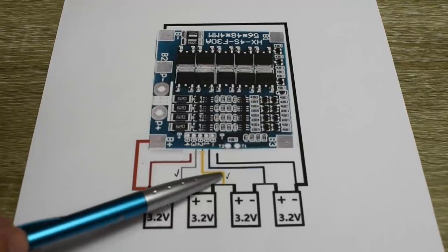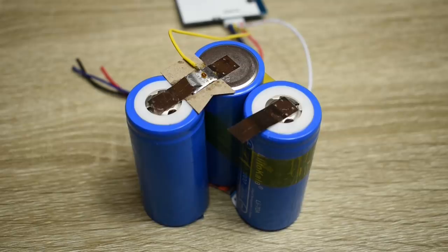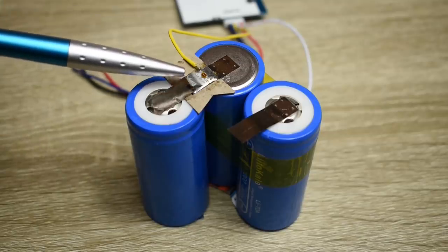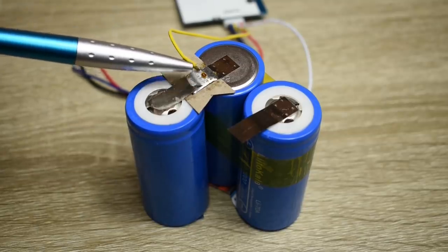Now the next one is going to be the yellow. The third cell is now soldered in position, and you can see the yellow wire is connected to that point.